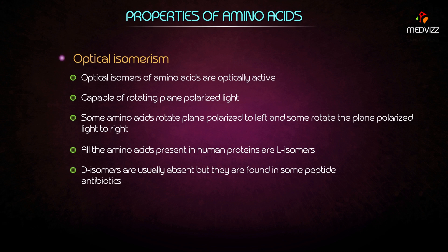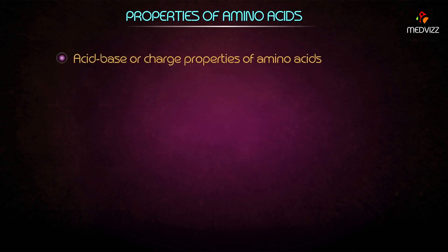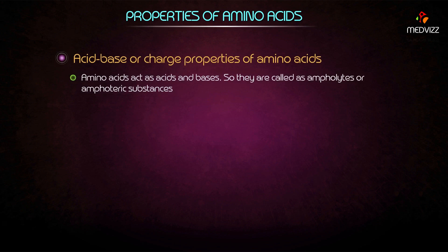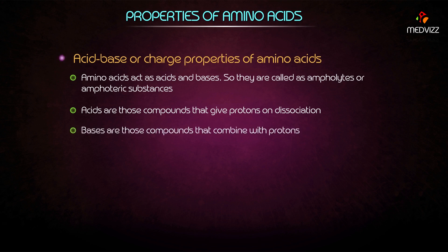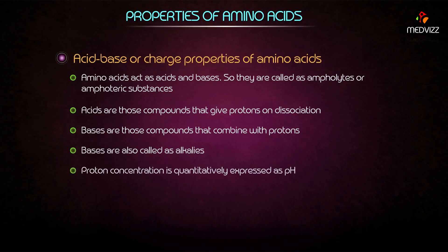D-isomers are usually absent but are found in some peptide antibiotics. Acid-base or charge properties of amino acids: amino acids act as both acids and bases, hence are called amphilites or amphoteric substances. Acids are compounds that give protons on dissociation; bases are compounds that combine with protons and are also called alkalies.